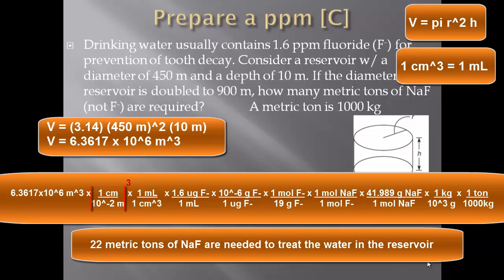So you're going to need 22 metric tons of NaF to treat a reservoir of drinking water that's 900 meters in diameter and 10 meters in height. This is a little bit more challenging — don't get discouraged. You have to read through the problem and understand where you're going. You also have to remember certain things from general chemistry. I expect you to know all of the prefixes and powers of 10, all of the important conversions, like 1 centimeter cubed equals 1 milliliter, and 2.54 centimeters equals 1 inch.